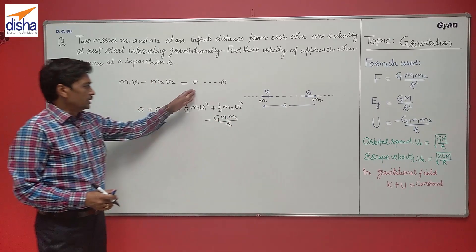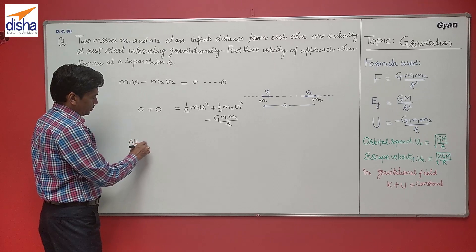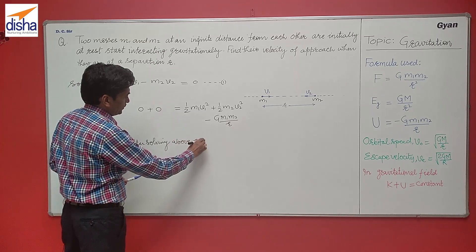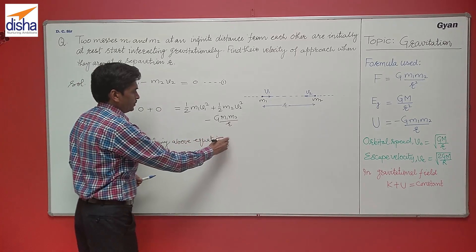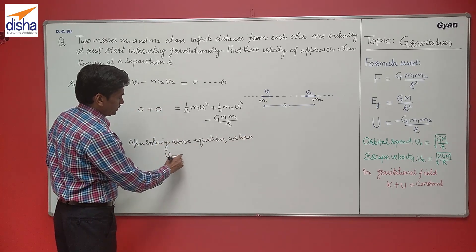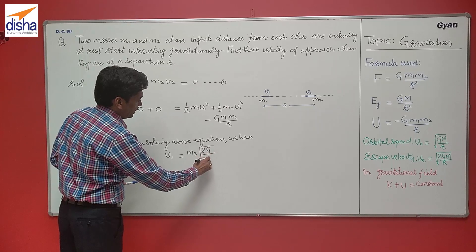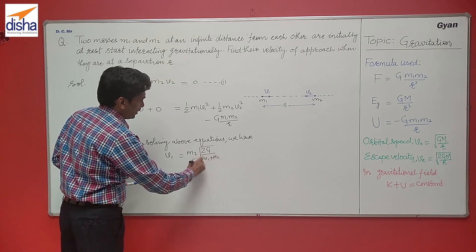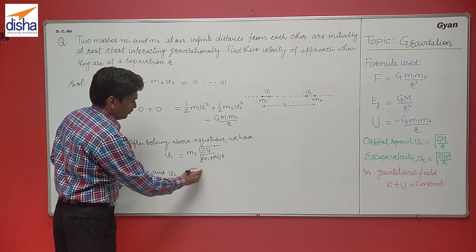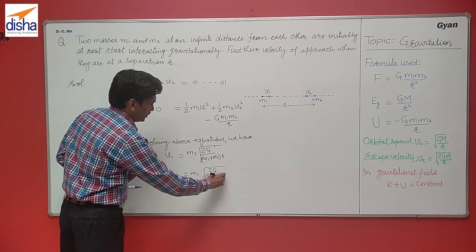Now solving these two equations for V1 and V2, after solving, we have V1 is equal to M2 times under root 2G upon M1 plus M2 R, and V2 is equal to M1 under root 2G upon M1 plus M2 R.